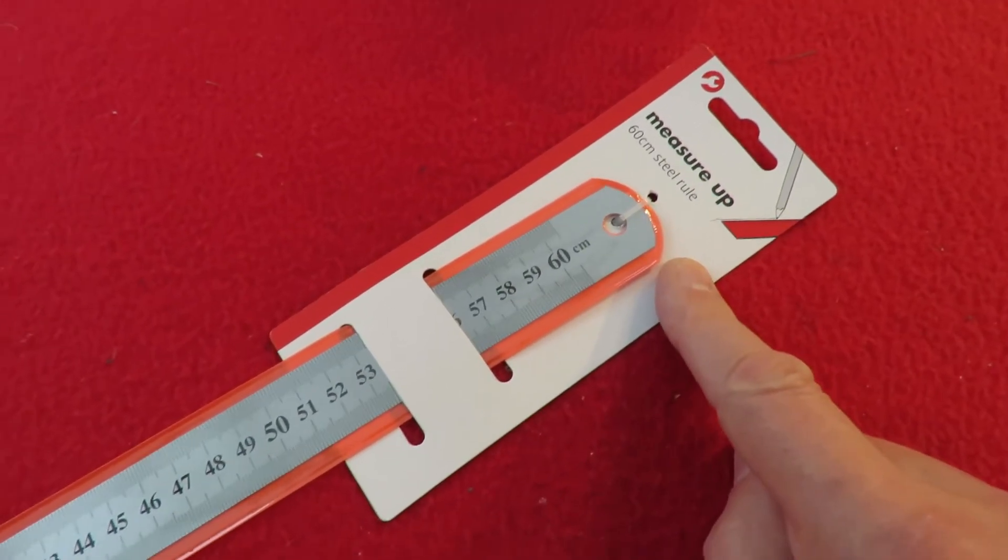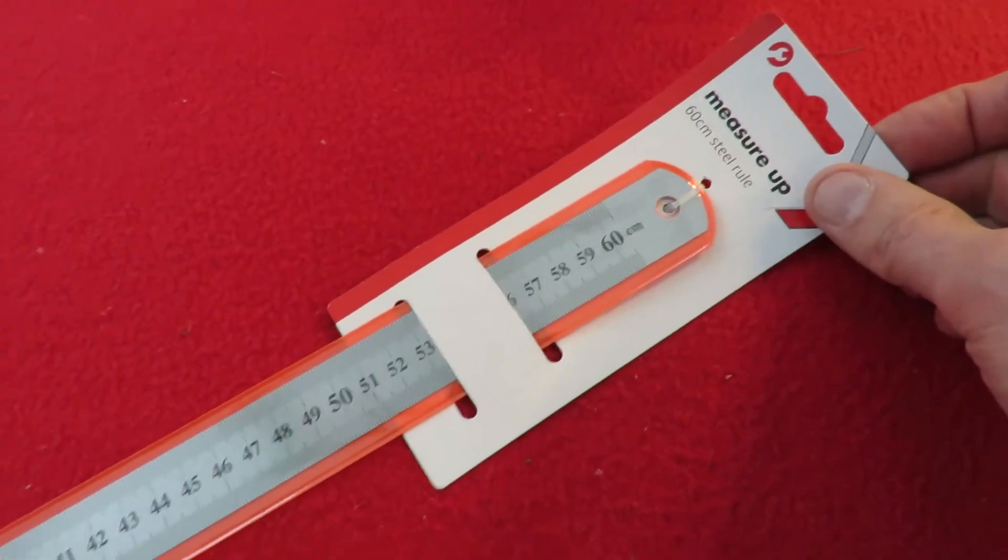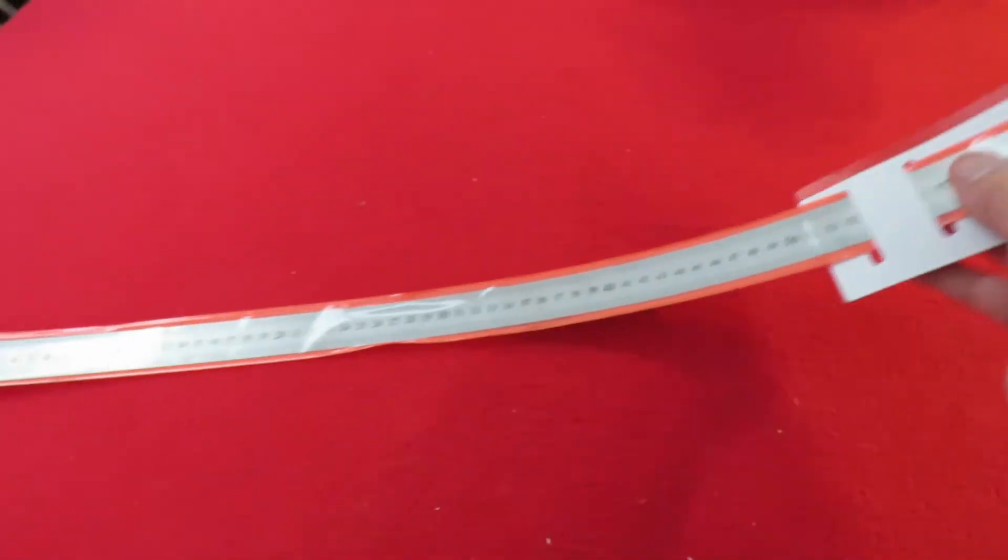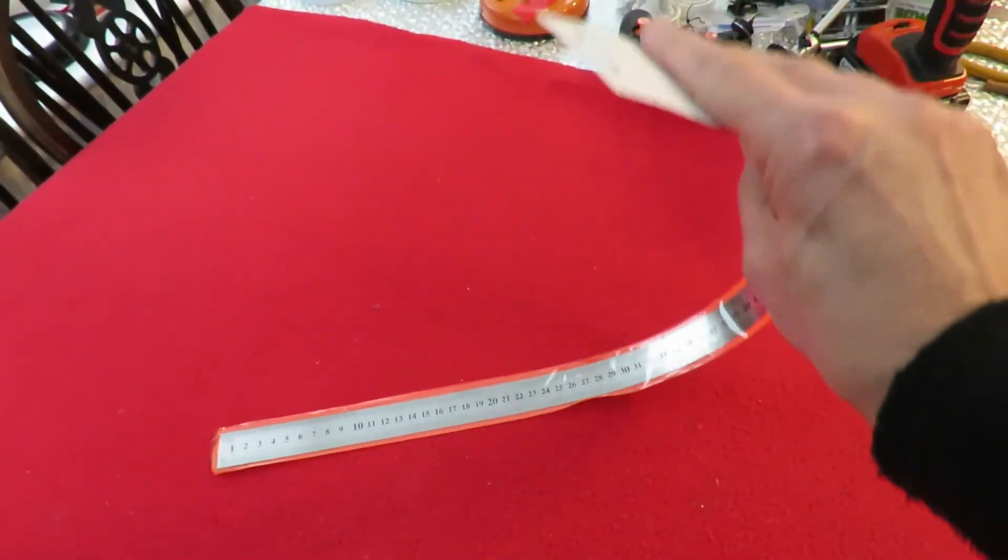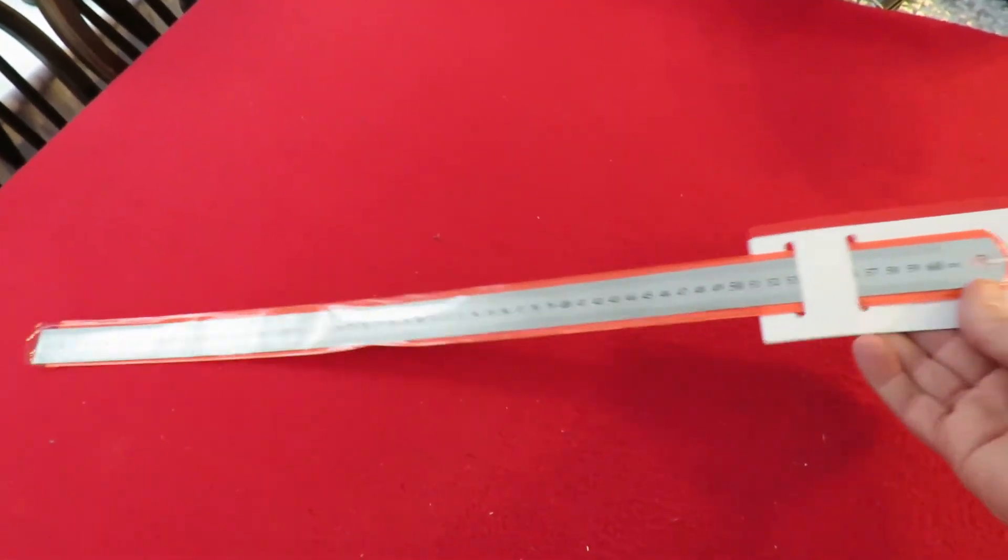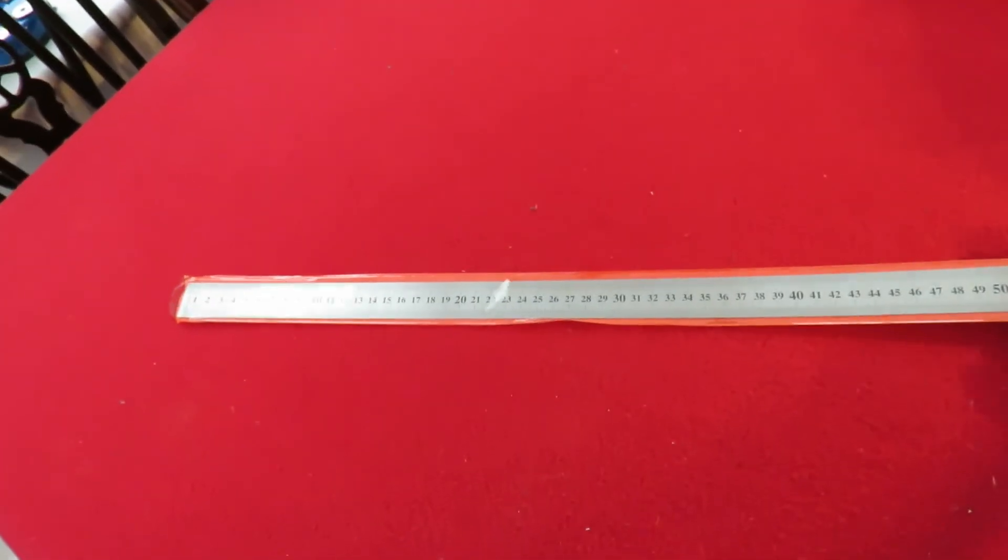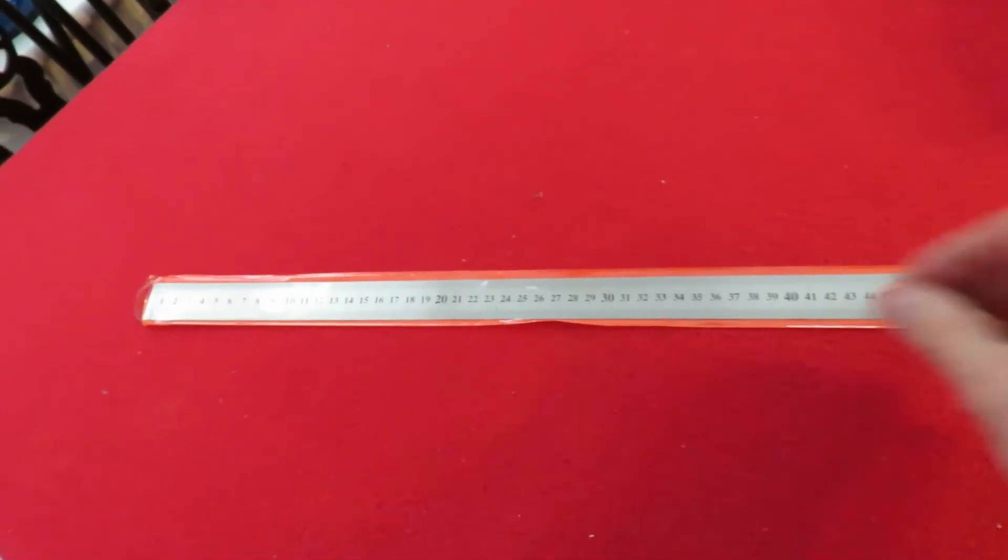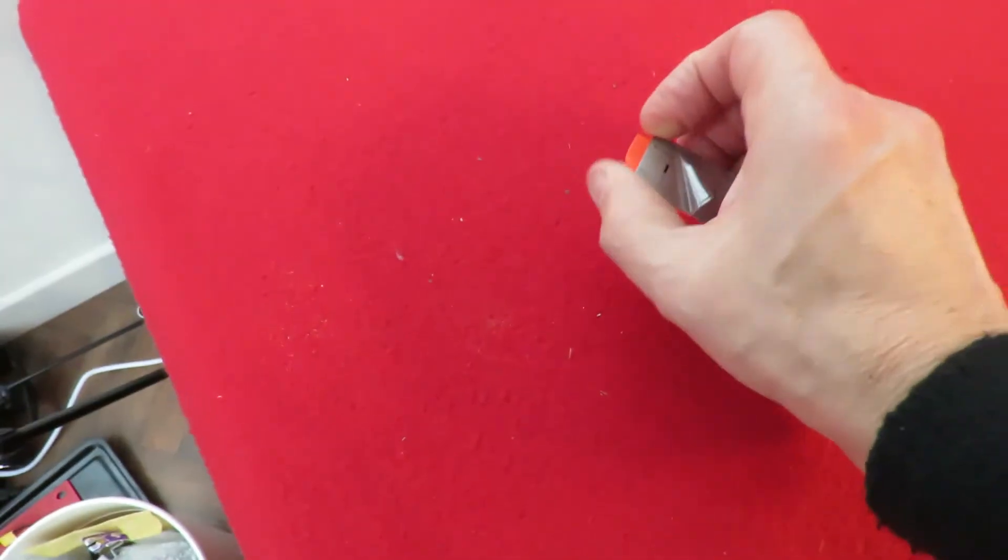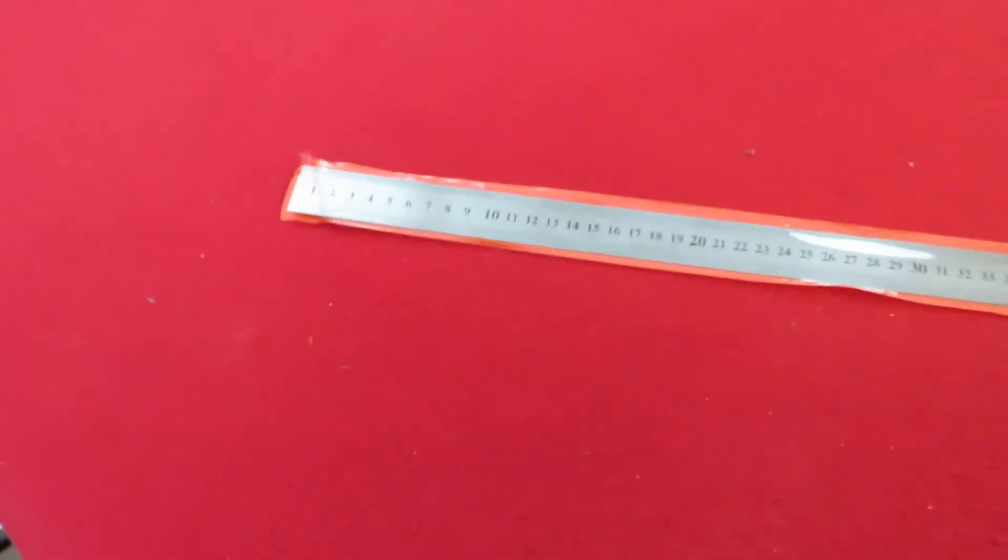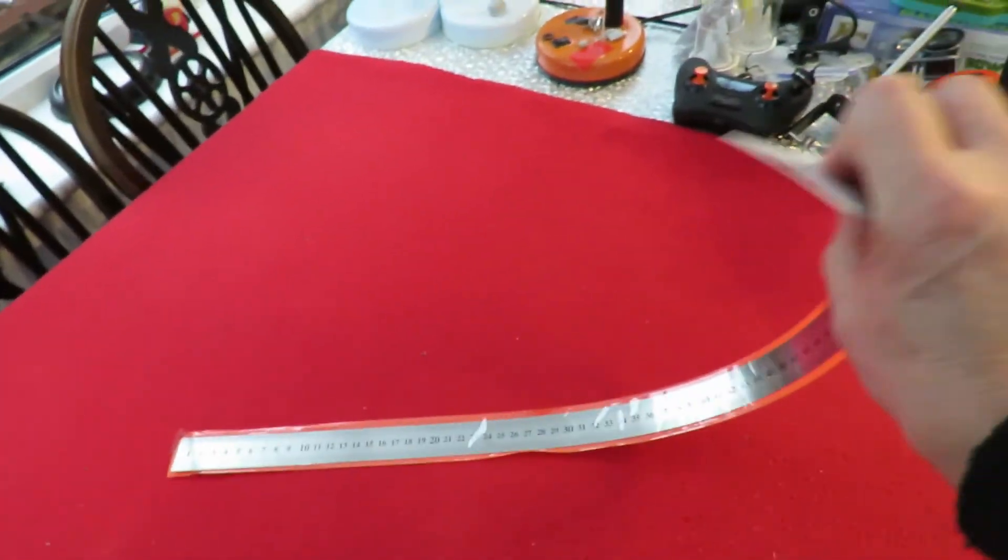Talking about steel rulers. I picked this one up in Poundland a little while back. That's a 60 centimeter steel ruler. And that's a nice springy metal. That you could probably use to do the same thing. So that's an alternative idea. It is pretty thin. But it is springy. So yeah that would probably do the same job.